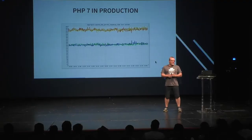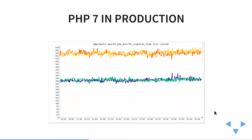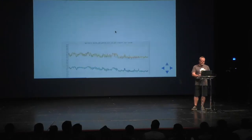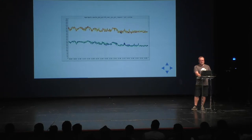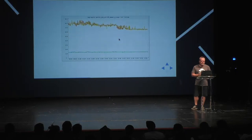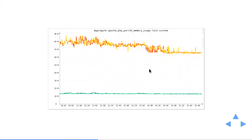I did this upgrade at Etsy in New York. Here's a graph of our P95 response time in milliseconds: the fire colors are two PHP 5.5 servers, and this is a PHP 7.0 server. Latency dropped from about 460 milliseconds down to 260 — about a 200 millisecond drop. CPU usage dropped basically in half, and memory usage dropped from about 80 megs down to 12-16 megs. A huge drop across the board.